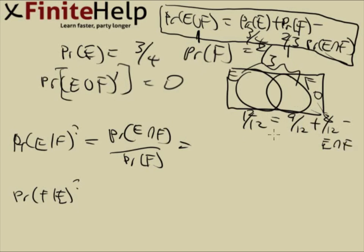This is 17 minus the 12. Rearrange it, you'll figure out that E intersect F is going to be 5/12. And F is two-thirds, which is 8/12. And that's going to come out to 5/8.